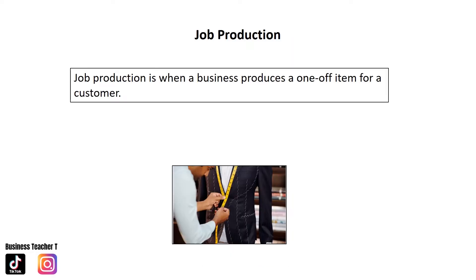Job production is when a business produces a one-off item for a customer. Examples of job production include pottery, paintings, creating an advertising campaign, and making a tailor-made suit.